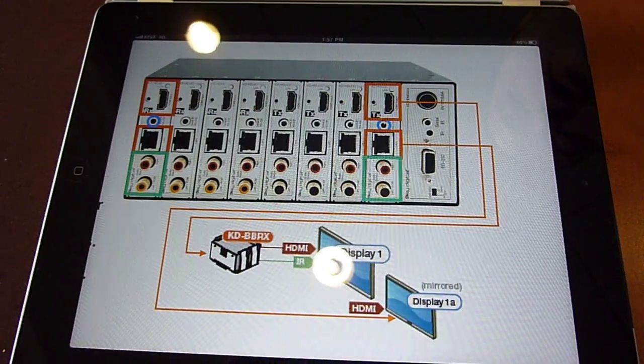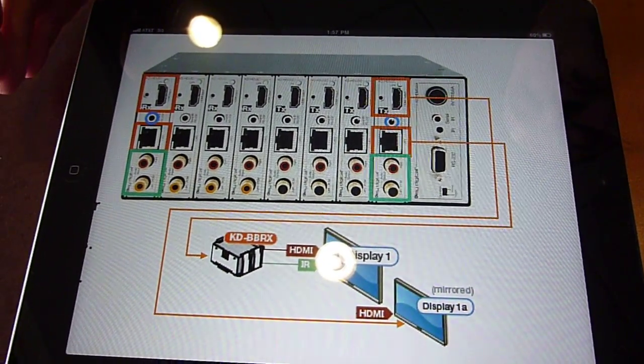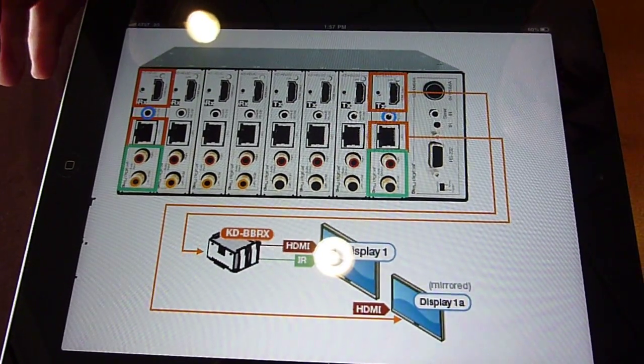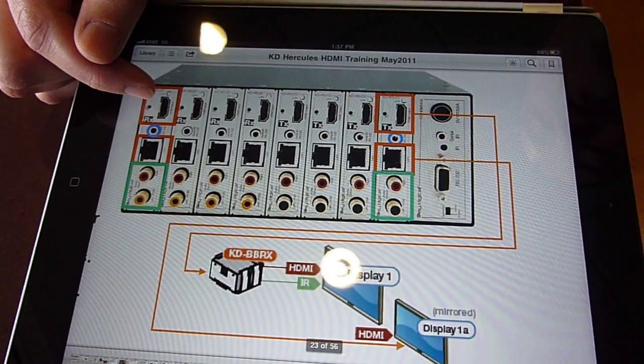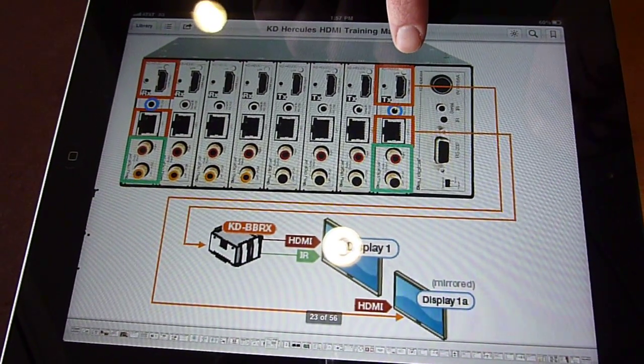You can also take audio from other inputs as well. So if you happen to be watching in your family room the squawk box but you don't want to listen to the squawk box and you would like to listen to your iPod dock, you can actually have audio coming from your iPod dock, video coming from your satellite box and have it all go out HDMI from any of the outputs you'd like to choose.